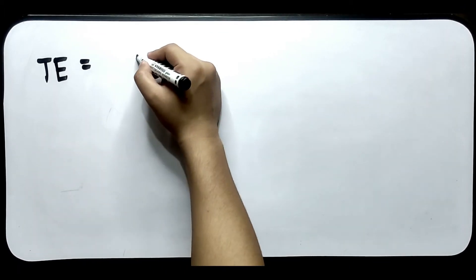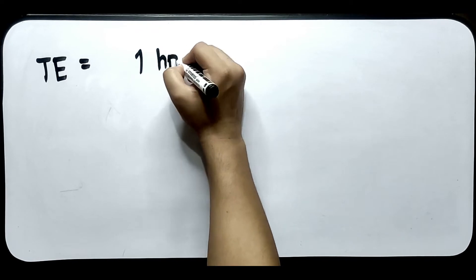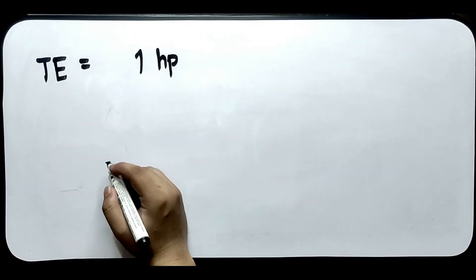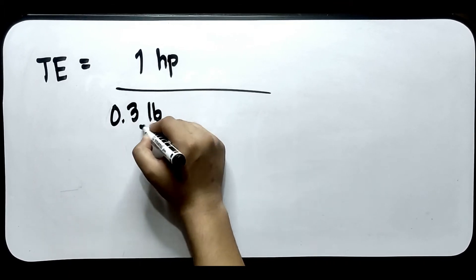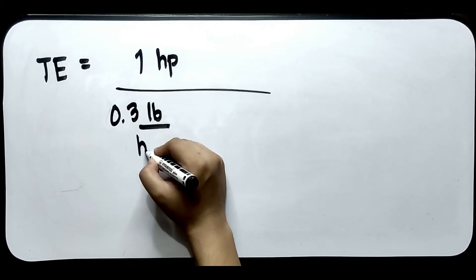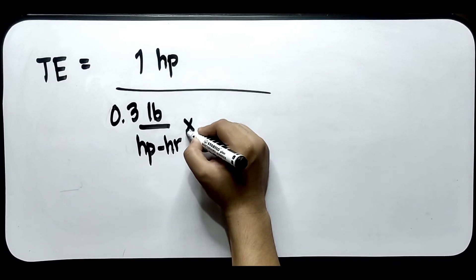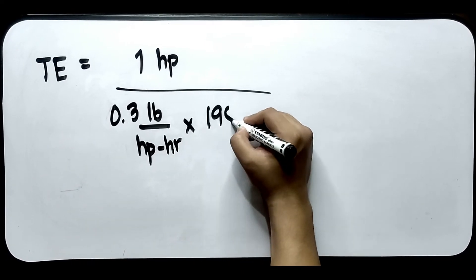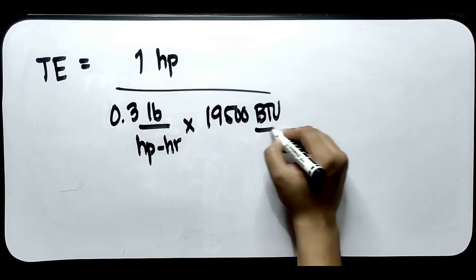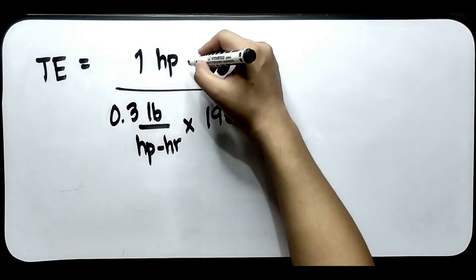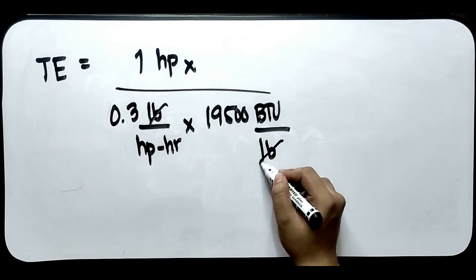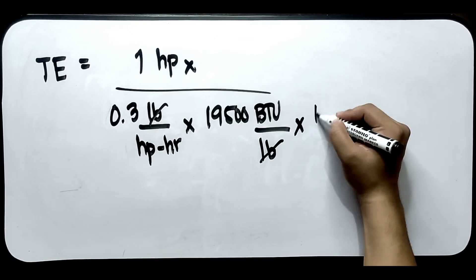So, meron tayong 1 hp, or bhp, divided by 0.3 pounds per bhp-hr. Times yung heating value of fuel natin na 19,500 BTU per pound. Kasi times ito ay 1 hp pa.